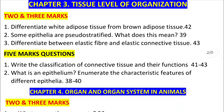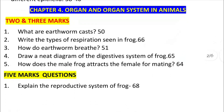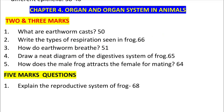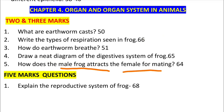In Chapter 4, the important topics include: types of respiration seen in frogs, how frogs breathe, a neat diagram of the digestive system of frogs, and how male frogs attract females.